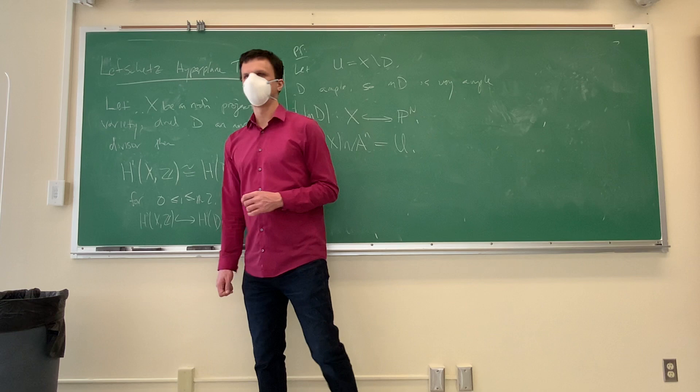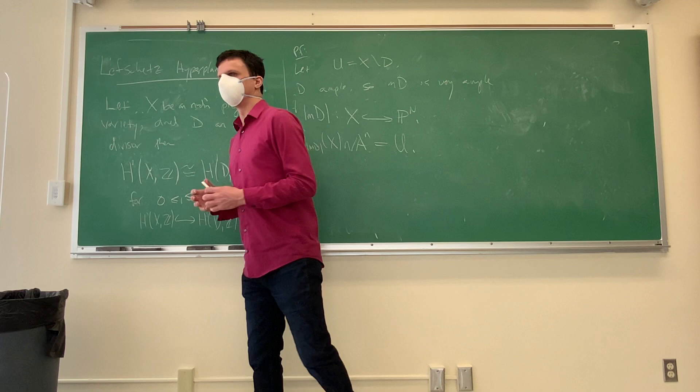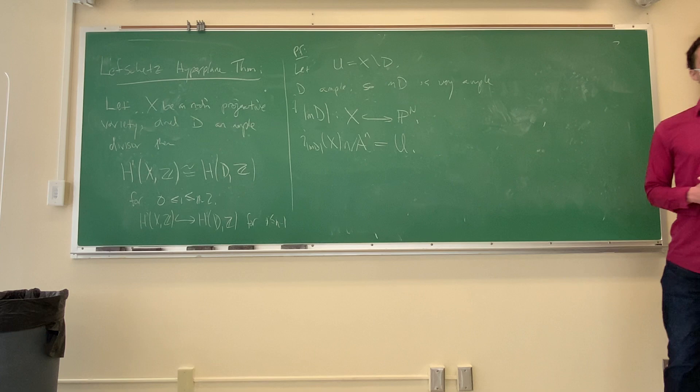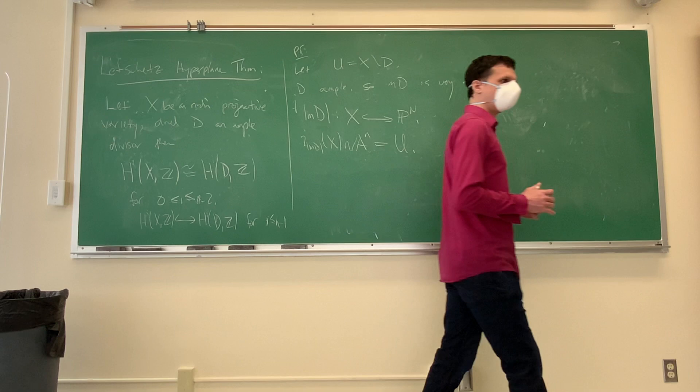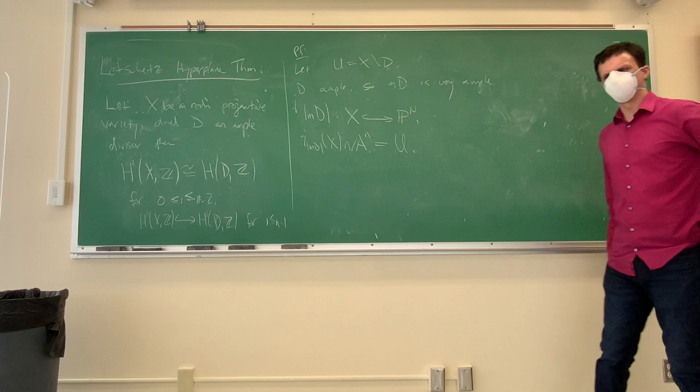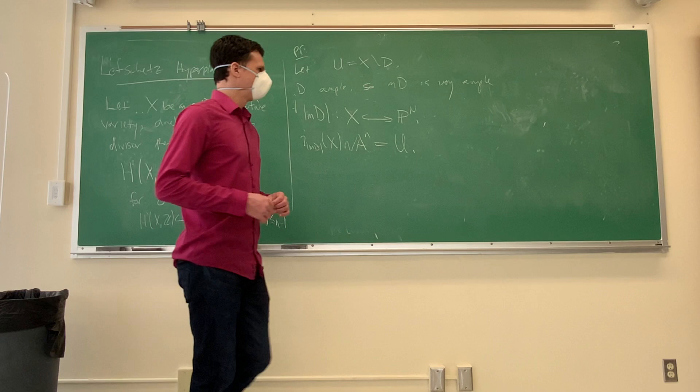We've already seen the example where X is P^2, a surface. You don't get much that's super interesting there, but you do get an isomorphism in degree 0, which tells you that a hyperplane section of a surface is always connected. This is something like a theorem of Grothendieck as well. You can get various versions of the theorem in different dimensions.